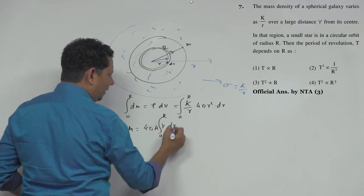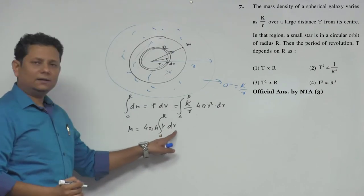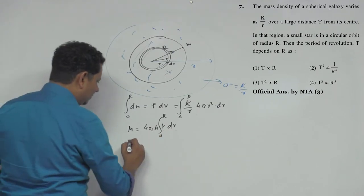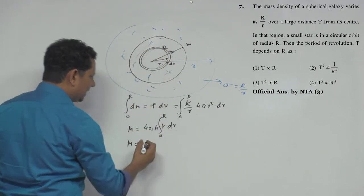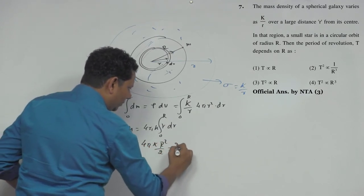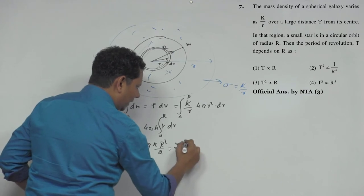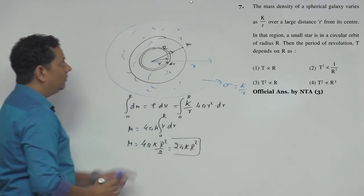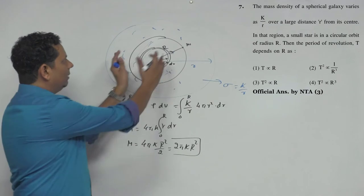r dr integration from 0 to r - we know r dr integration gives r²/2. So the mass of galaxy which is inside becomes 4πk r²/2, which equals 2πk r².